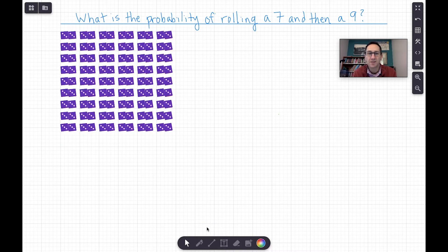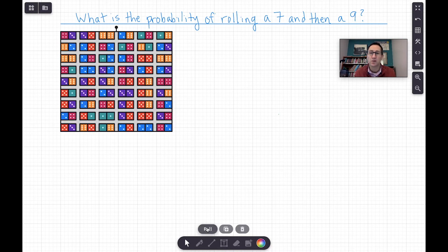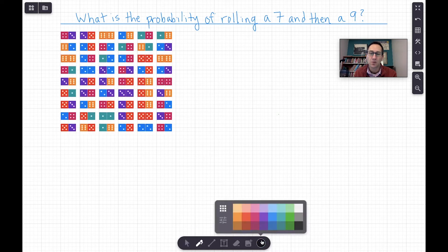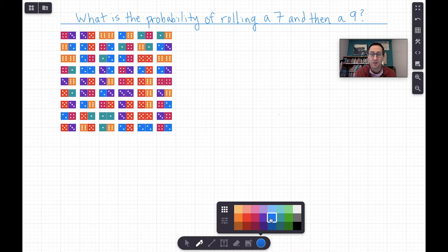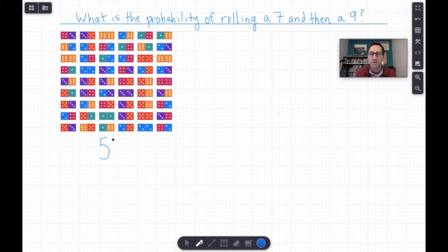So I'm going to roll all these just to see. And the question that we're thinking about is what's the probability of rolling these and getting a seven and a nine. So what we have here, and I would have students do this on a canvas as well so they could follow along on their own canvas, we have 54 pairs of two dice.